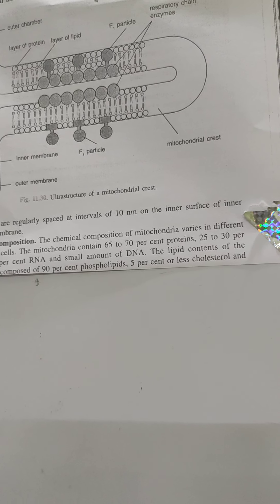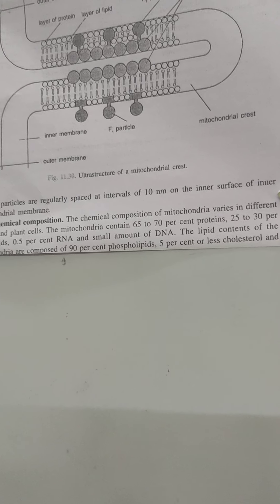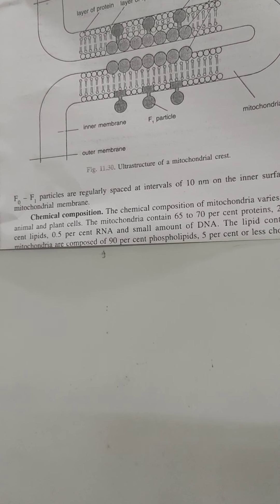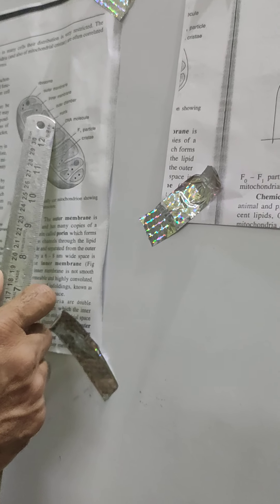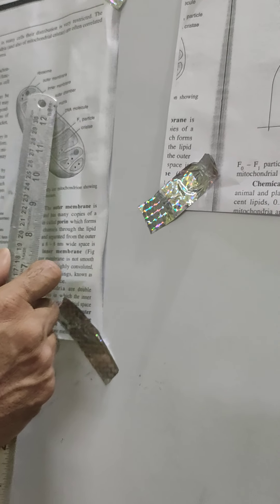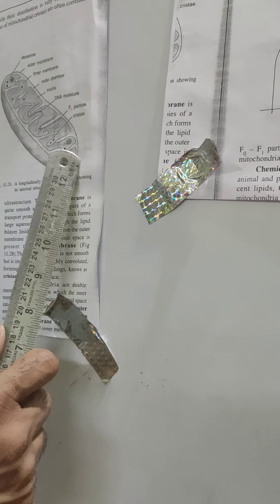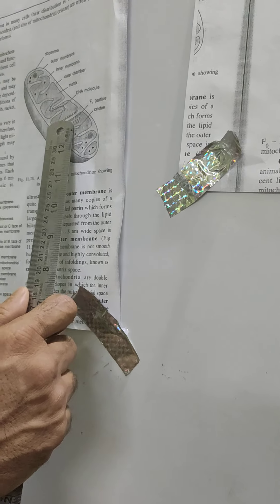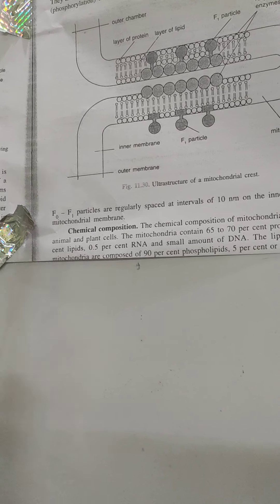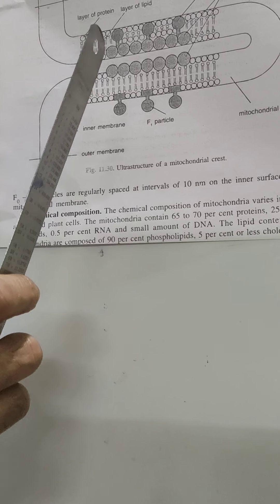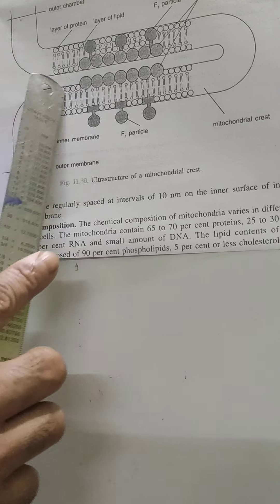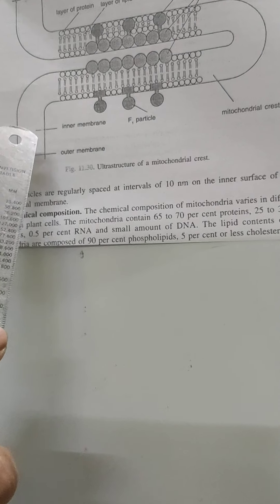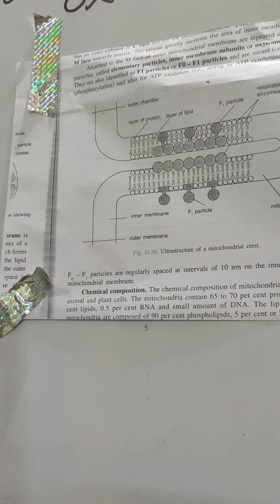Mitochondria have two membranes like other cell organelles, and the space between the inner and outer membranes is called the perimitochondrial space. Outside the inner membrane is the outer chamber, and the inner chamber consists of finger-like projections called cristae, within which mitochondrial matrix remains suspended. Elementary particles are rich in ATPase and are responsible for synthesis of ATP.